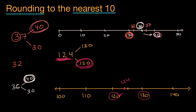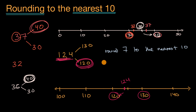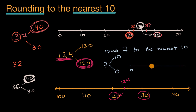Let's do one more example — a one-digit number. Let's round 7 to the nearest 10. Pause this video and see if you can do that. Well, seven is between what two tens? Seven is less than one ten, and greater than zero tens — so it's between zero and 10. On the number line with zero, five, and ten marked, seven is right about here. We can see that seven is closer to 10 than to zero — it's only three away from 10, but seven away from zero. So you round up to 10.